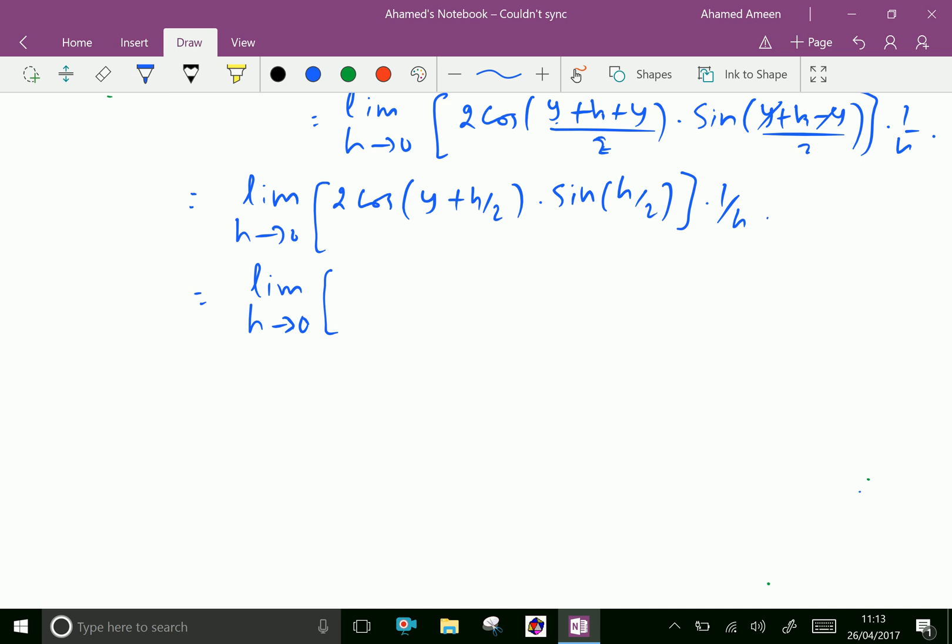h over 2 times 2. So we can give the limits separate for both, that is cos of y plus h over 2 times limit sine h over 2 over h over 2.